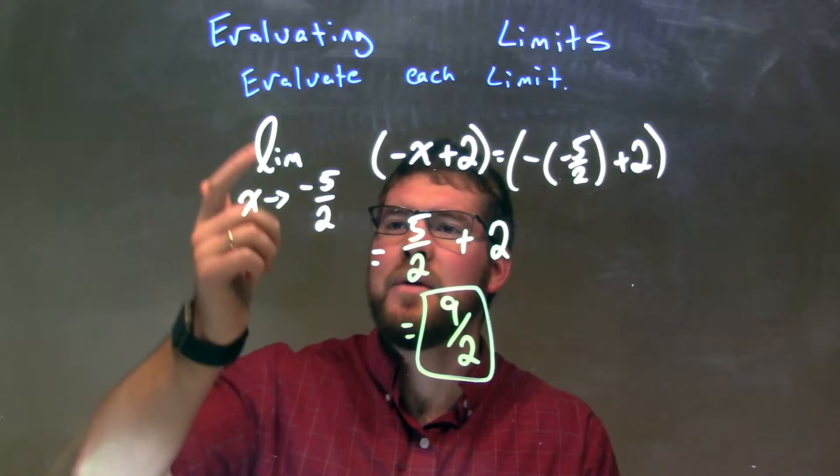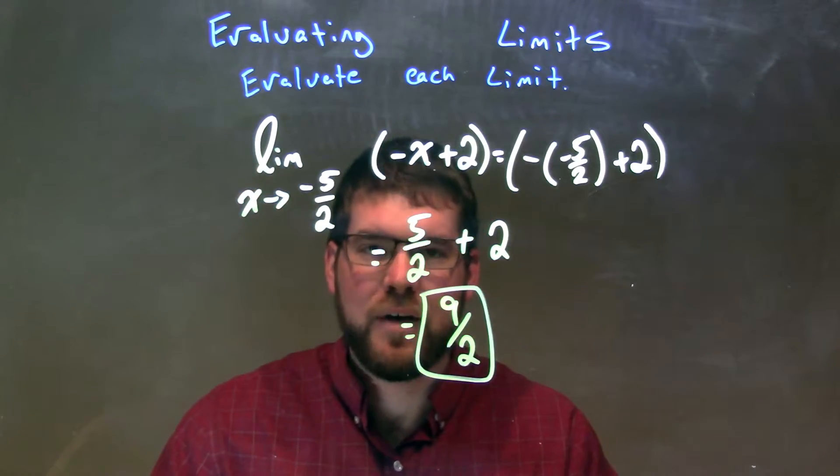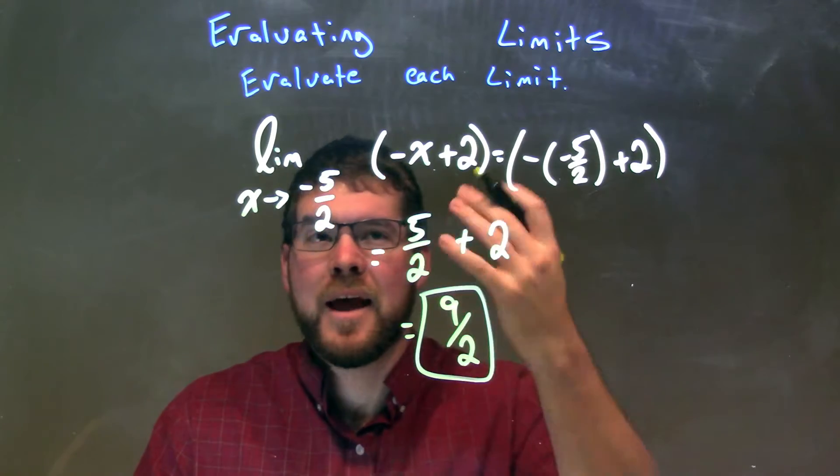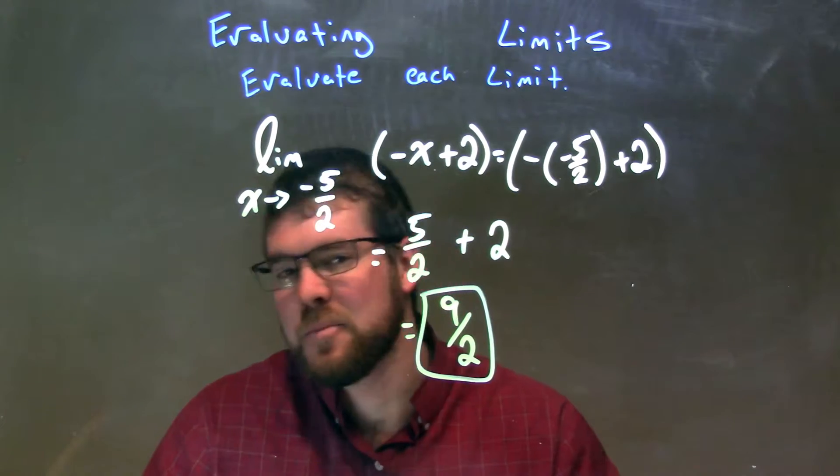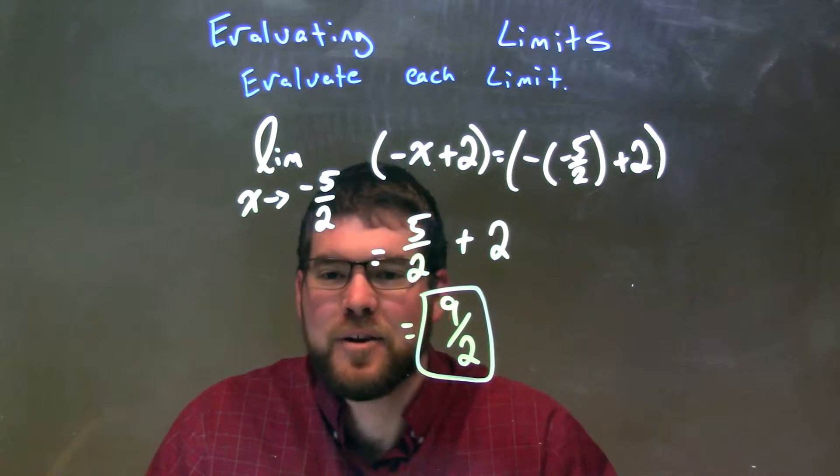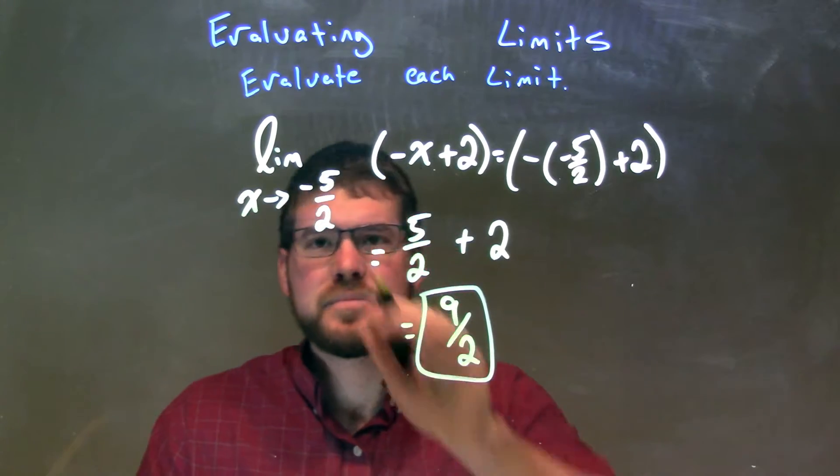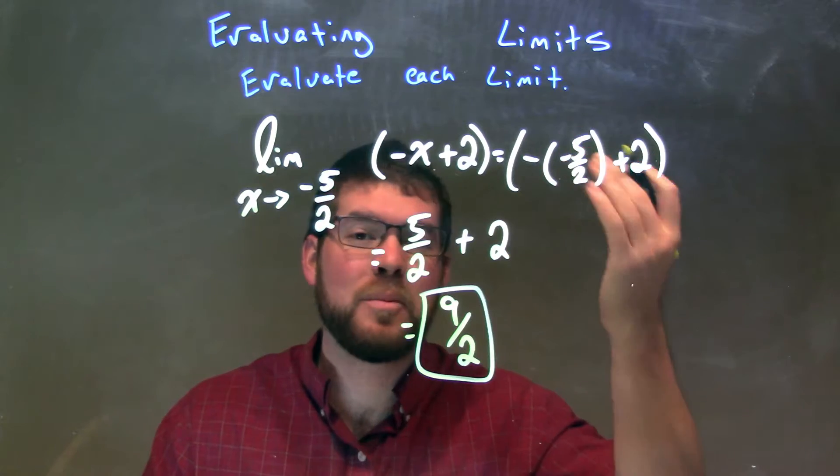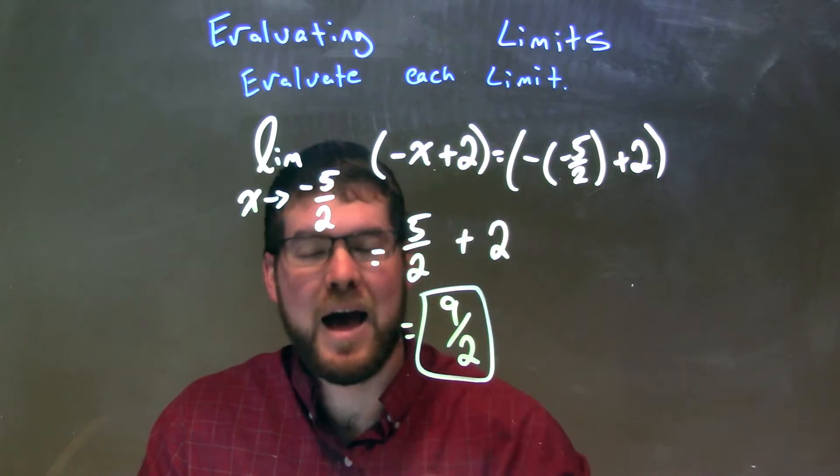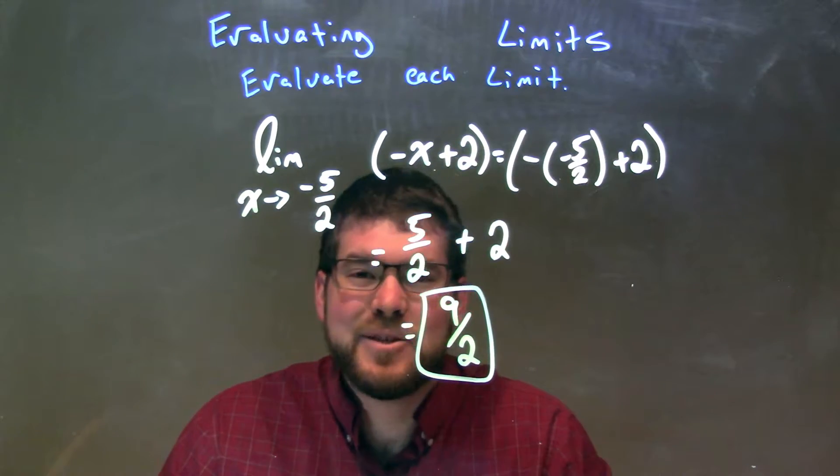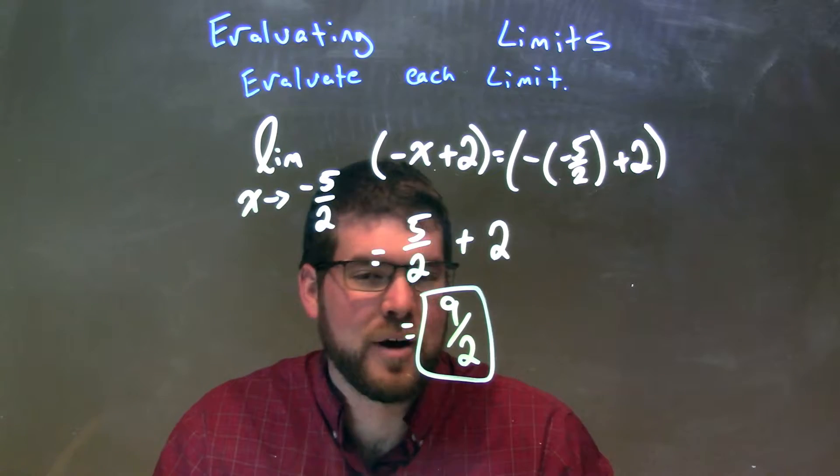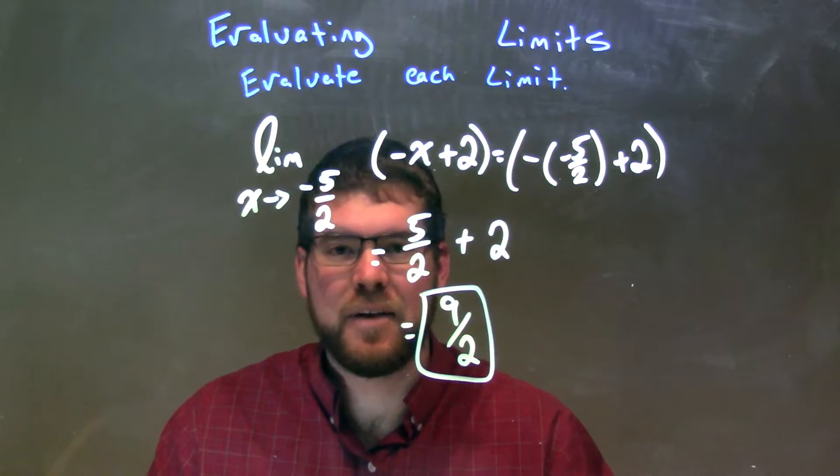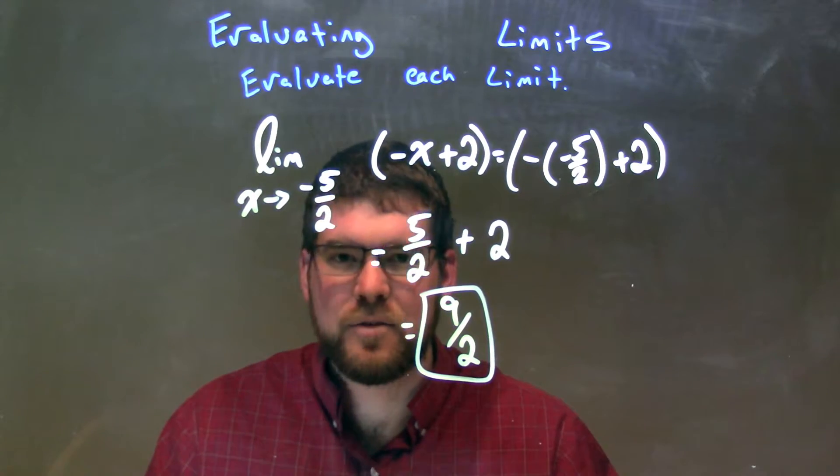Let's recap. We're given a limit as x approaches negative 5 halves of negative x plus 2. Since negative x plus 2 is a polynomial, this is degree 1. We plug in the negative 5 halves in for x. We'll get a double negative, which makes it a positive. So we have 5 halves right there, plus 2. 2 is 4 halves, right? We keep the same fractions there. So, 5 halves plus 4 halves is 9 halves. Again, 9 halves is our final answer.